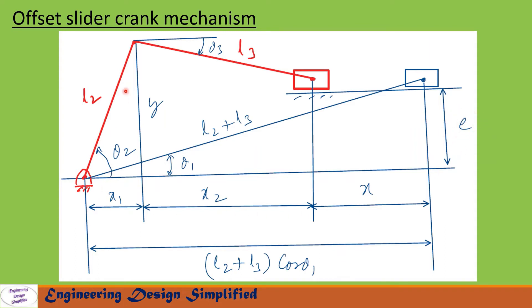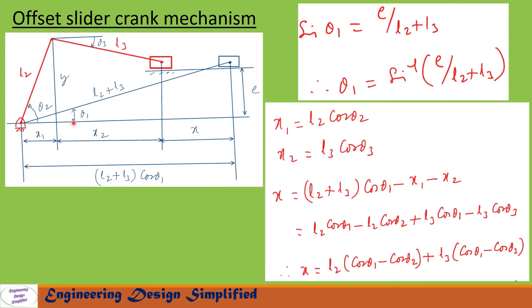This is the offset, the horizontal component of l2 is x1, and the horizontal component of l3 is x2. When the crank rotates by an angle theta2, the slider moves from this position to this position — let us call this the slider displacement x. From this right-angle triangle, this side is l2 plus l3, this side is e, and this angle is theta1. So theta1 can be found as sin(theta1) = e / (l2 + l3), giving theta1 = sin⁻¹(e / (l2 + l3)).